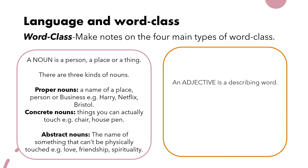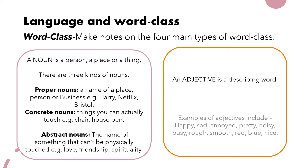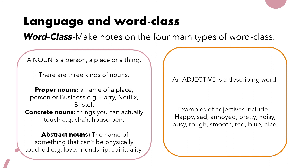Nouns are also coupled with adjectives. Adjectives are used to describe a noun, and arguably they're the most important part of a sentence because they add all the description we need. Examples of adjectives include happy, sad, noisy, nice, blue, and red — all of these help to describe a noun. A noun and an adjective kind of go together in this sense.